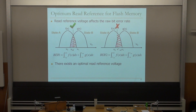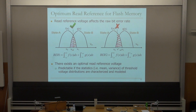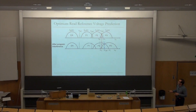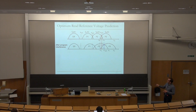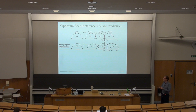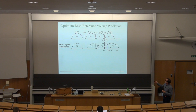There exists an optimal re-reference voltage that is predictable if the threshold voltage distribution statistics are characterized and modeled. If you can predict that the distribution will shift by a certain amount after some number of program-erase cycles, you can adapt your re-reference voltage to the distribution changes. Flash controllers actually do this. When you have program interference, neighboring cells get affected and threshold voltages shift to the right — so you predict that shift from Vref3 to Vref3-prime.